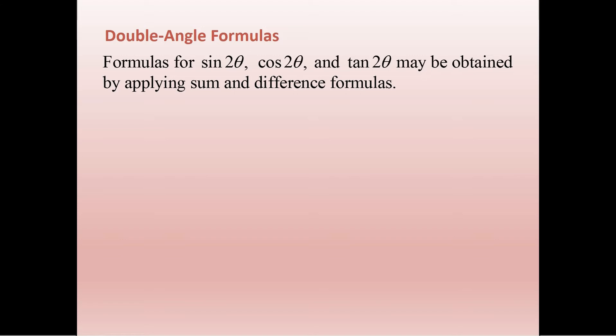We can basically get these by applying our sum and difference formulas. So for sine of u plus v, we know that that's alternating sine and cosine, keeping the sign the same in the middle: sine u cosine v plus cosine u sine v.